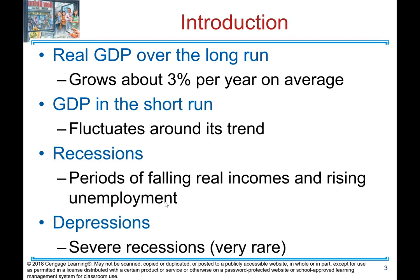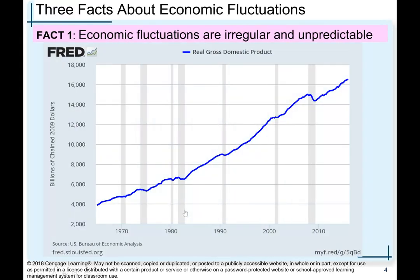By way of introduction, real GDP over the long run has grown about three percent per year on average. In the short run, GDP fluctuates around its trend. Periods of recessions involve falling real incomes and rising unemployment. Depressions are very severe recessions and they are rare. Let's go over some facts about economic fluctuations.